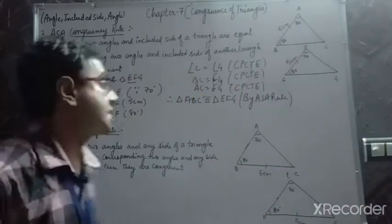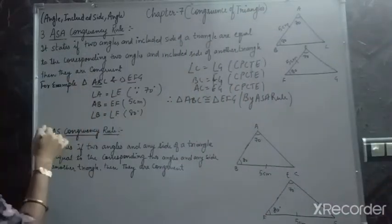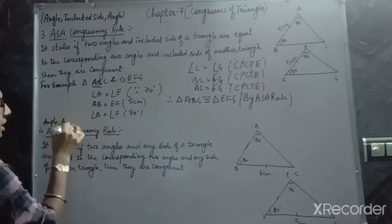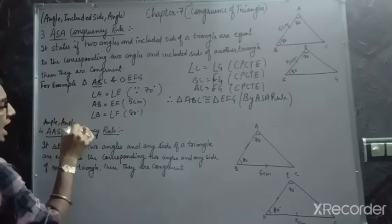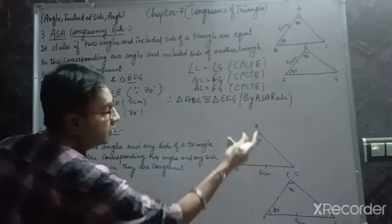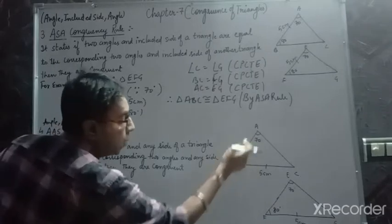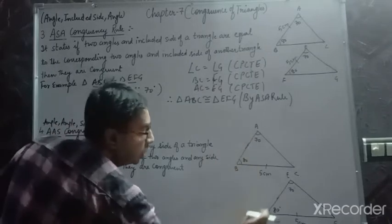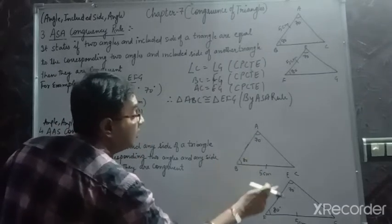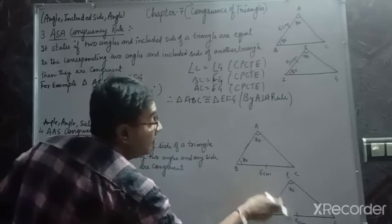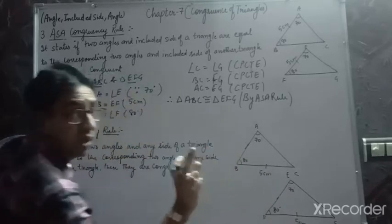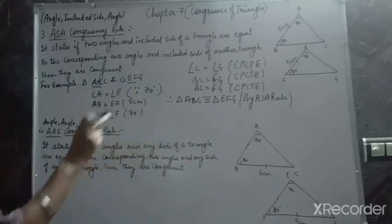Next is AAS — angle, angle, and side. In this, again, we have two angles and a side, but we are not considering the side in between. We are considering another side which is not the included side. Therefore, AAS.